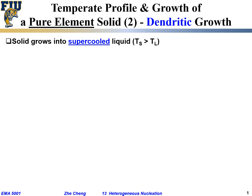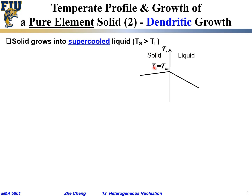Now let's look at an opposite situation. We are still talking about solidification of a pure element, but the solid grows into a supercooled liquid, meaning the liquid temperature is actually lower than the solid temperature — or an undercooled liquid, meaning the solid temperature is higher than the liquid temperature. This schematic illustrates the temperature profile on both the left side (solid) and right side (liquid), and within the liquid we see a temperature gradient, but overall the liquid temperature is lower than the solid temperature.